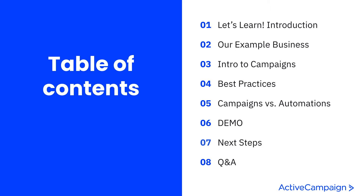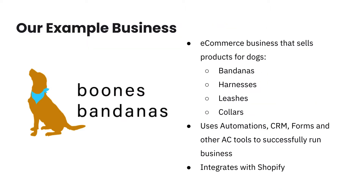Our example business today is an e-commerce business that sells products for dogs. They're hosted on Shopify and connect through our deep data integration, where all of their data comes over to let us know about purchasing and customer usage. We're also using tools in the platform like automations, campaigns, CRM, and the forms builder. Today though, we want to focus specifically on how Boone's Bandanas uses campaigns.